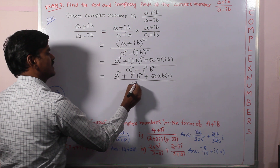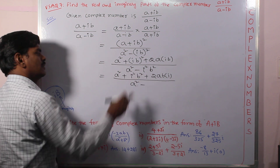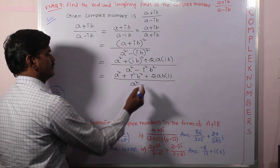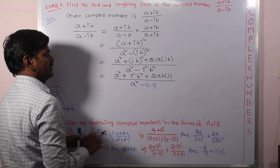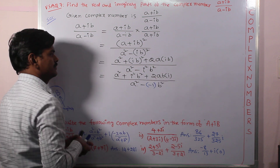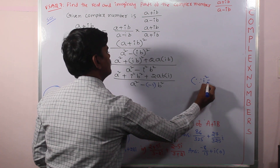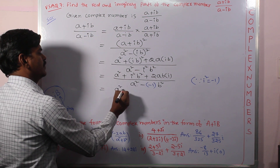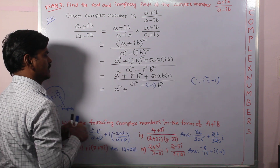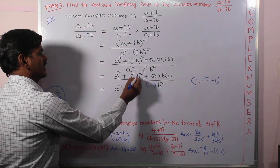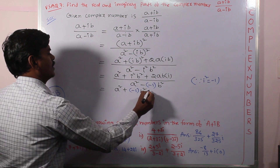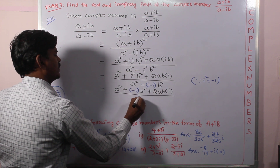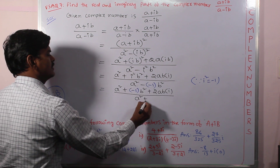Now, what is the value of i²? The value of i² is -1. So substituting i² = -1: the numerator becomes a² + (-1)b² + 2abi = a² - b² + 2abi. The denominator becomes a² - (-1)b² = a² + b².